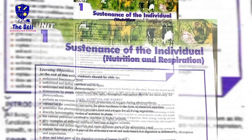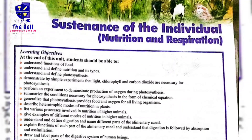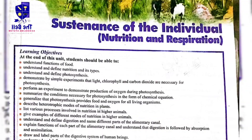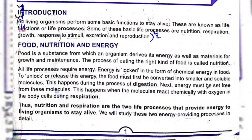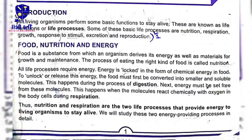Chapter 1 is 'Sustainance of Individual,' in which we will learn about nutrition and respiration of plants and animals. All living organisms perform some basic functions to stay alive. These are known as life processes. Some of these basic life processes are nutrition, respiration, growth, response to stimuli, excretion, and reproduction.